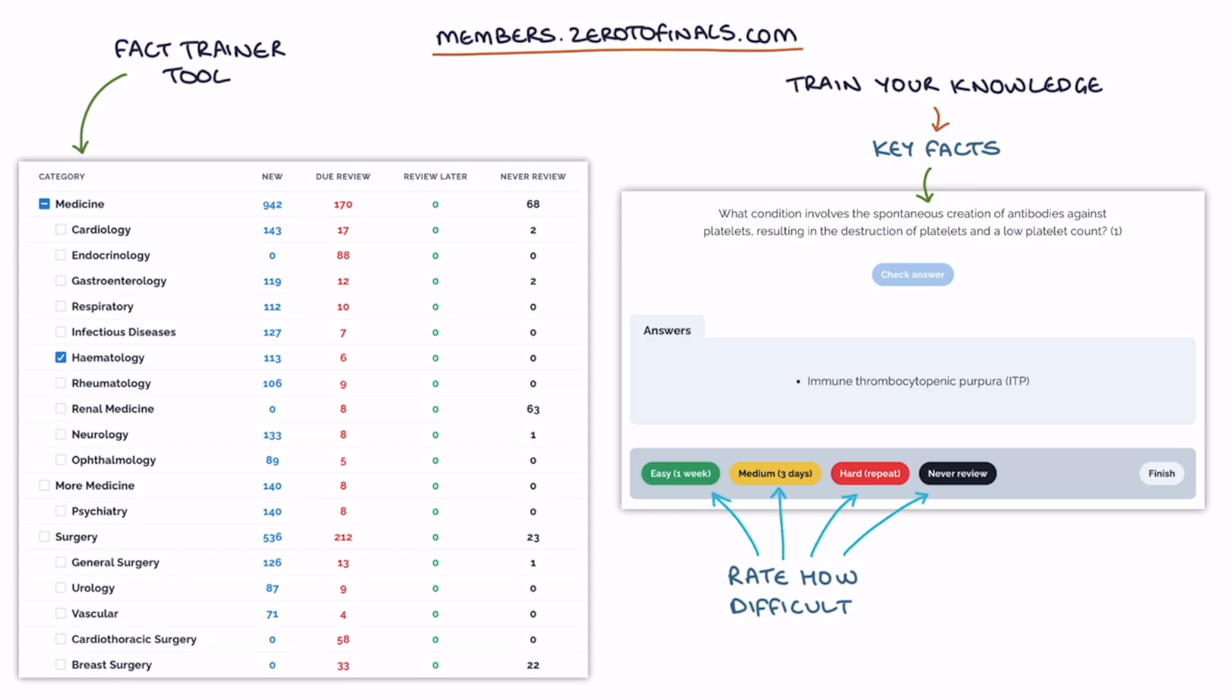The site then spaces out your repetitions and tells you when you're due to review it again. Going over the facts with spaced repetitions helps ensure they stay in your long-term memory. A link to the member's site is in the video description.